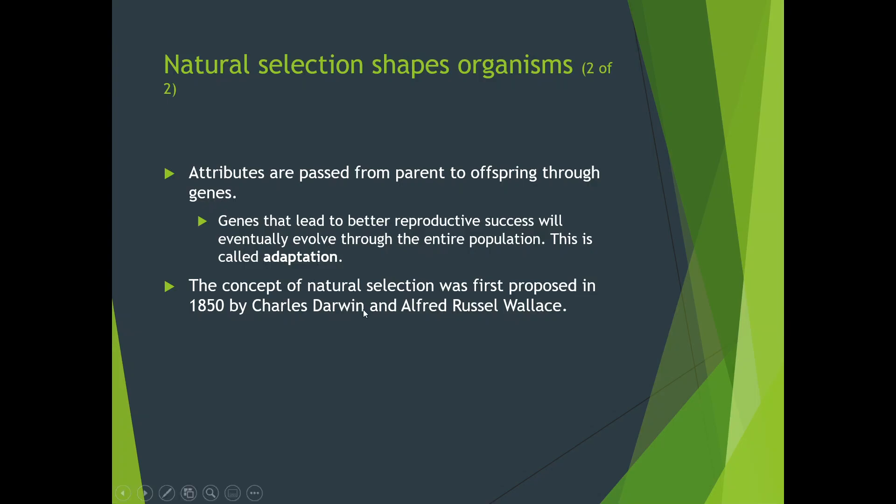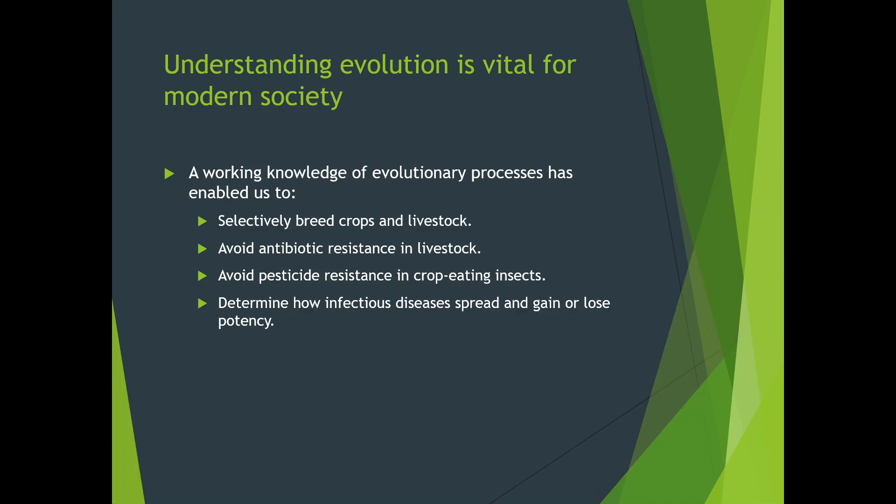The concept of natural selection started with Charles Darwin back around 1850. Working knowledge of evolutionary processes has enabled us to do many things — we've been selectively breeding livestock for a long time, as even the Bible mentions separating black and white sheep. We've also found ways to develop antibiotic-resistant livestock: there's a special gene in certain cows that prevents a certain disease, so we breed that one to keep that gene rather than relying on antibiotics. We also work to avoid pesticide-resistant crop-eating insects.